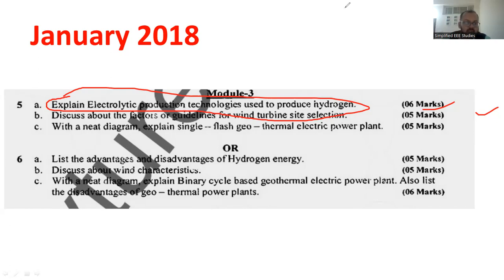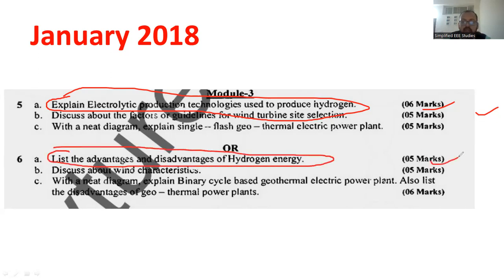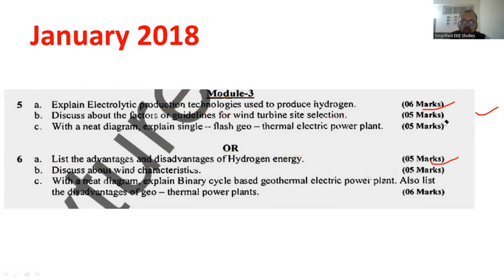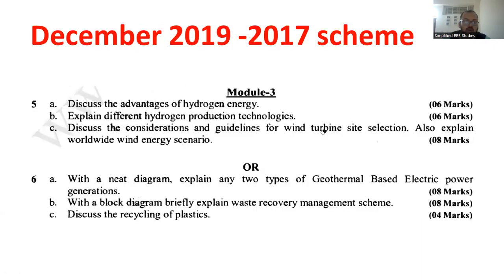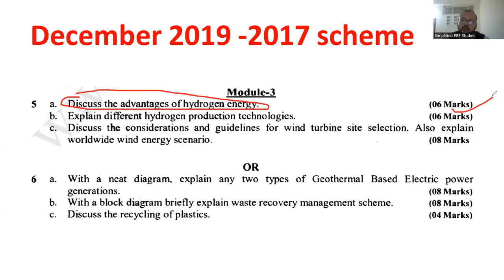I would like to move on to another set: list the advantages and disadvantages of hydrogen energy, which is having the weightage of 5 marks. We can easily write that, not an issue. Now, I will be showing you another question paper of December 2019. They have also asked one question: discuss the advantages of hydrogen energy. You can easily score 6 marks without any confusion.